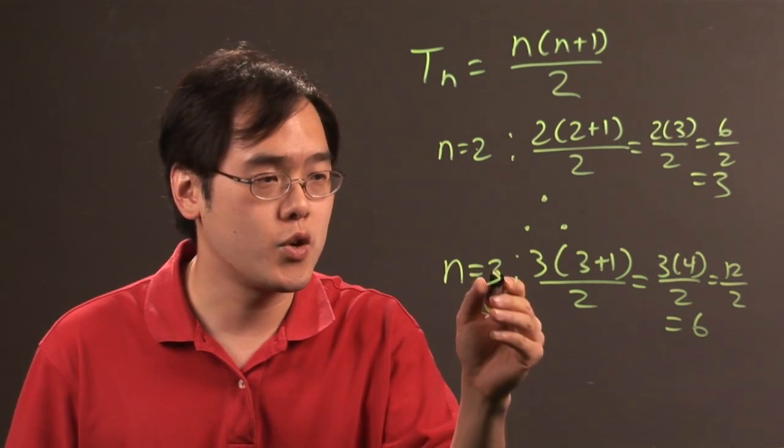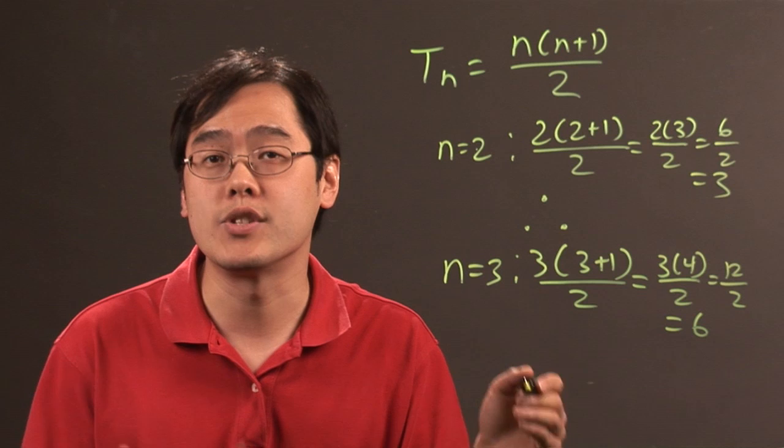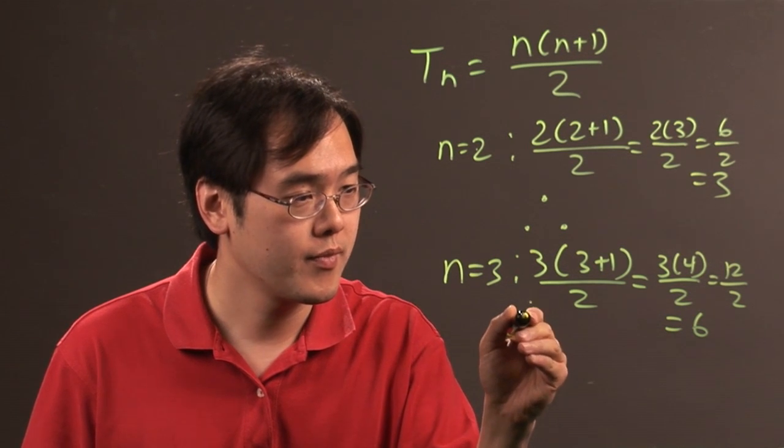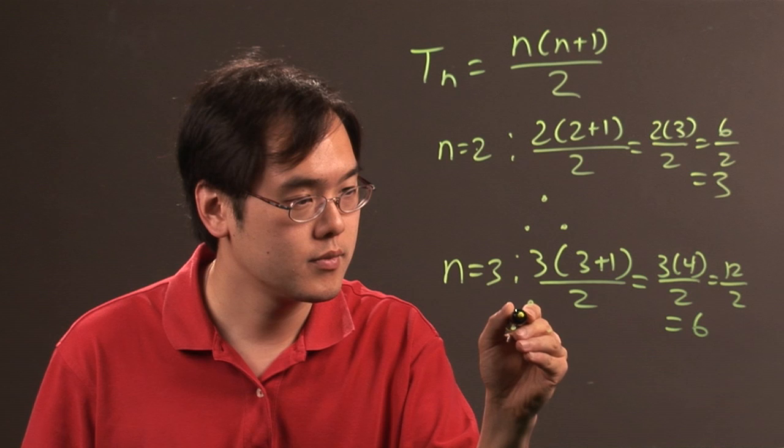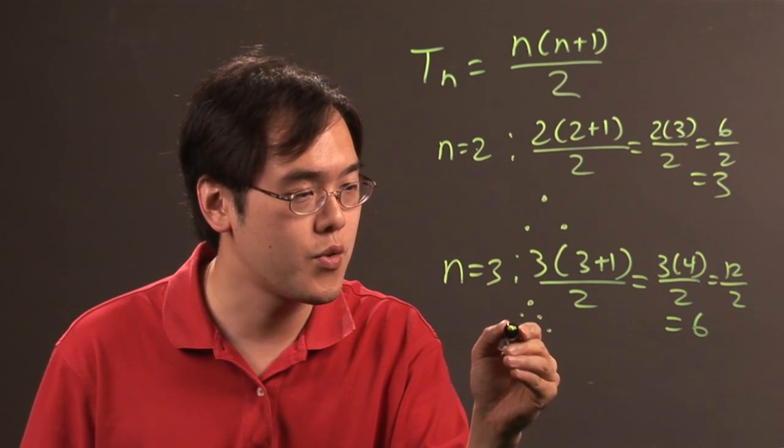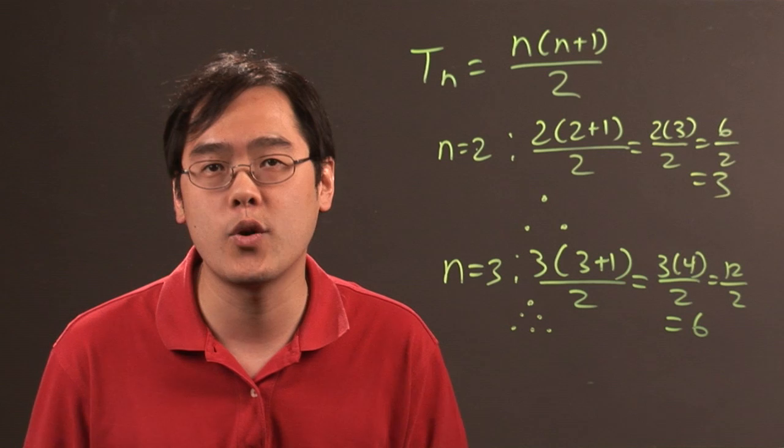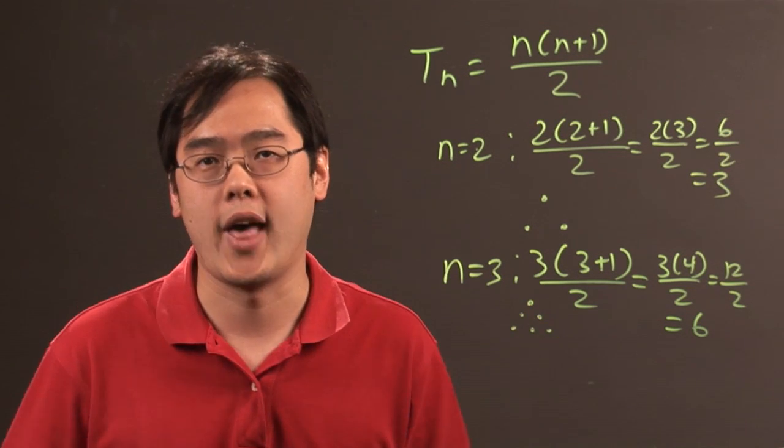So that means the number of objects required for an equilateral triangle of length 3 is going to be 6 objects. And we're going to use dots as an illustration. Okay, as you can tell, 1, 2, 3, 4, 5, 6 dots are required. And as you can tell, each side has length 3, and that's an equilateral triangle.